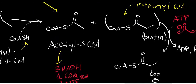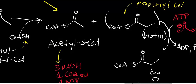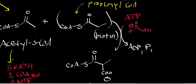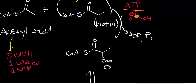With propionyl-CoA, we use propionyl-CoA carboxylase — a biotin-dependent carboxylation requiring bicarbonate as the carbon donor and ATP. So we're going to lose an ATP. This generates D-methylmalonyl-CoA. That ATP cost effectively cancels out the nucleoside triphosphate we generated from acetyl-CoA in the TCA cycle, so net we lose both.